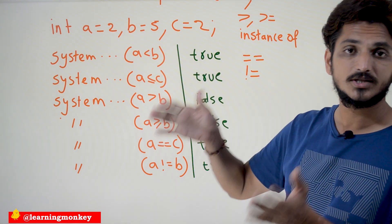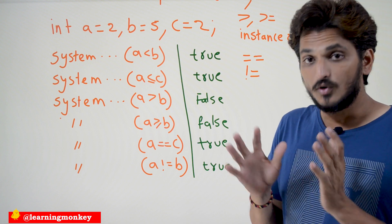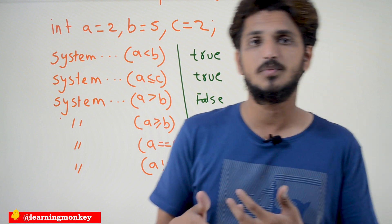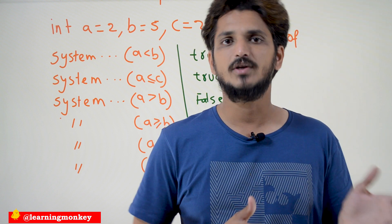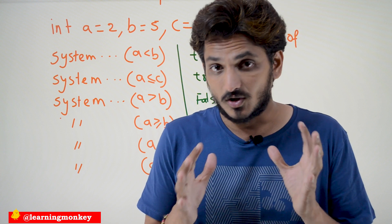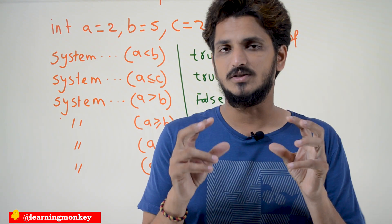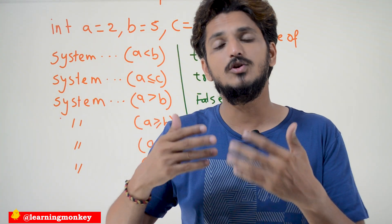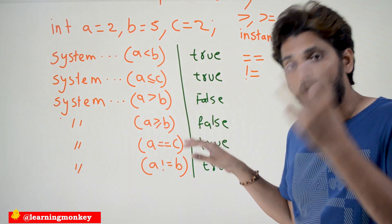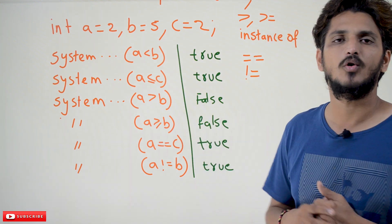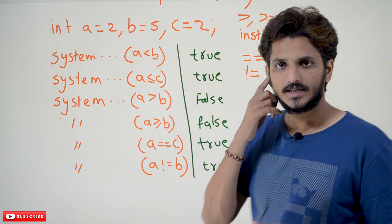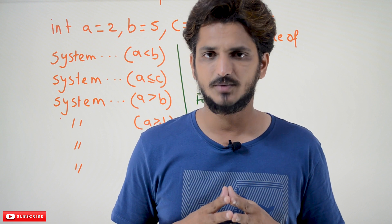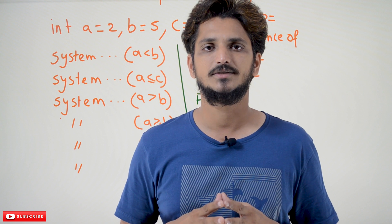This is how we are going to use relational and arithmetic operators. In our next classes we are going to discuss many more operators, including bitwise and logical operators. If you understand the concept of operators and how to write expressions, conditions and all those things you can easily understand. Hope you understand these examples. If you have any questions, please post them in the comment section below. Thanks for watching. If you haven't subscribed to our channel, please subscribe and press the bell icon for the latest updates. Thank you.